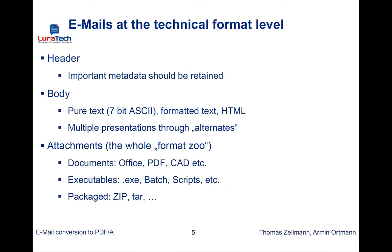At the technical level, emails basically have three parts. First is the header information — sender, receiver, date, time, and similar metadata — which is important for email archiving conversions and should be retained. Then there's the body — the text typed by users — which can come in various flavors: old ASCII-style formatted text or HTML, which you typically know from newsletters.